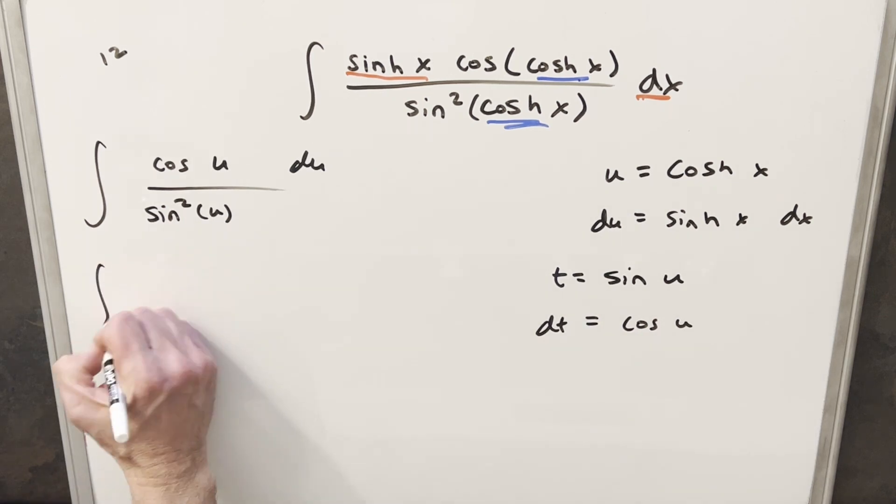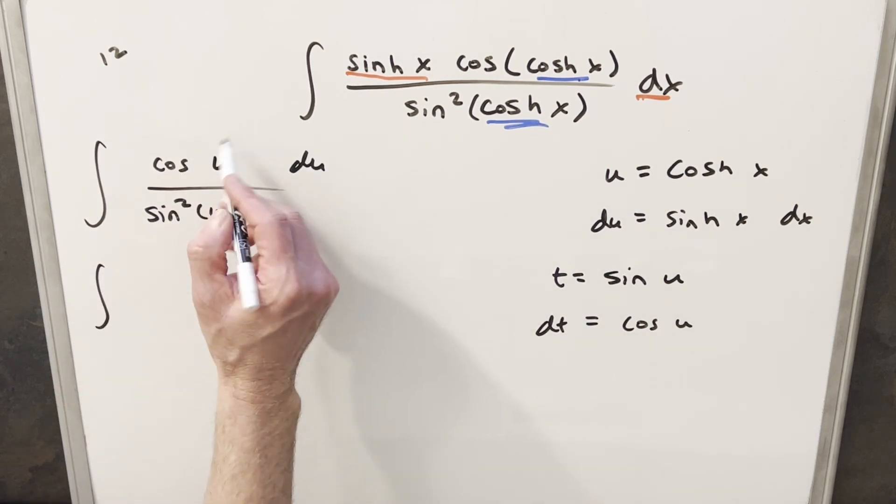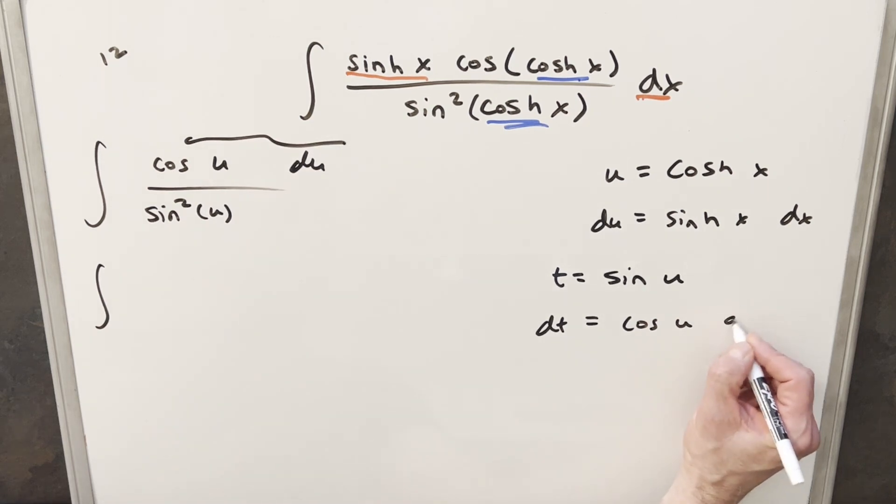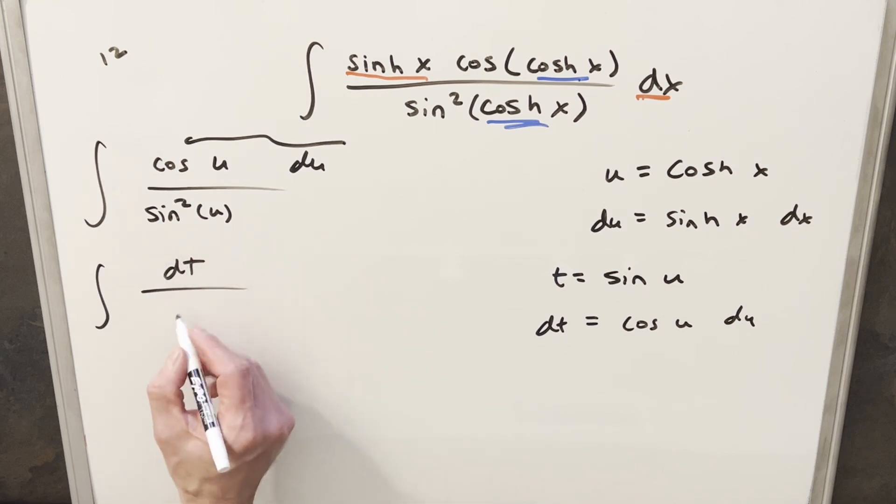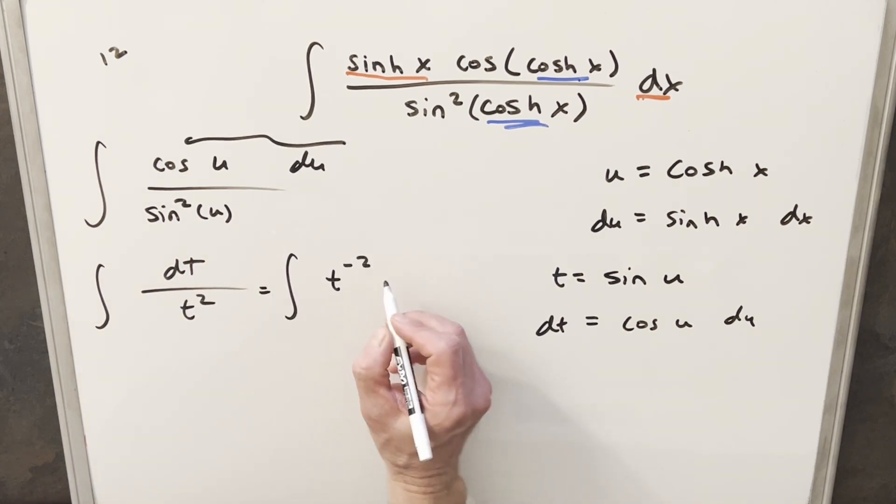So for now, let's just do this substitution. So what we're going to have, this whole thing here—I forgot my du over here—the whole numerator is just going to be our dt value. And then this thing is going to become t². But I can just write this as t⁻² dt and use power rule on this.